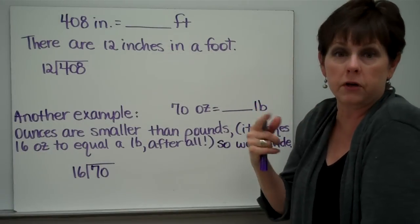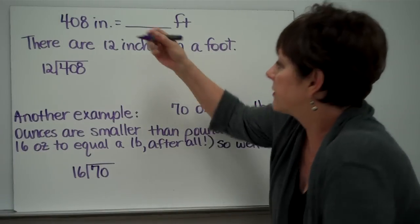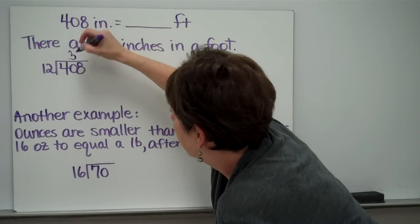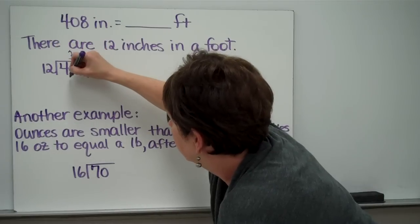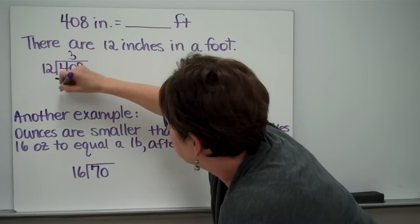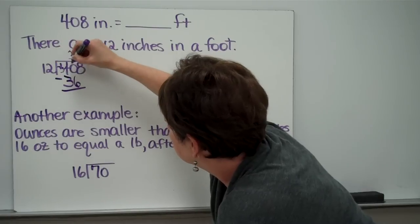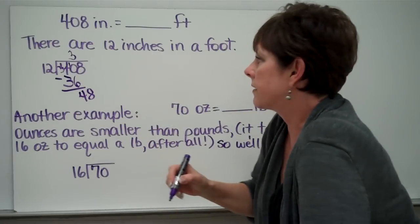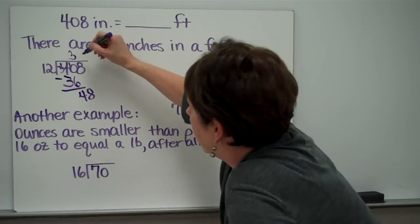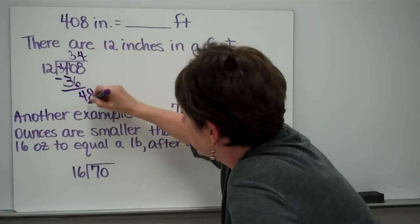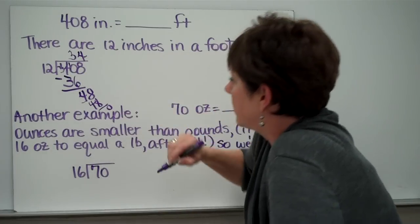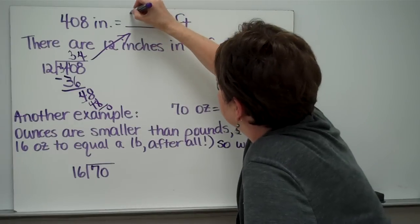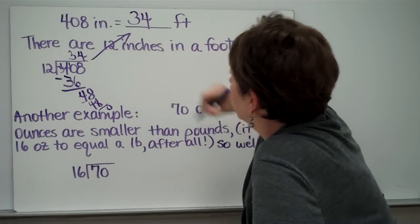There are 12 inches in a foot. We know that. And so we would say, well, 408 can be divided by 12, 3 times. 3 times 12 is 36. Subtract. 10 minus 6 is 4. Bring down our 8. 48 can be divided by 12, 4 times. 4 times 12 is 48. Subtract, 0. So 408 inches is 34 feet.